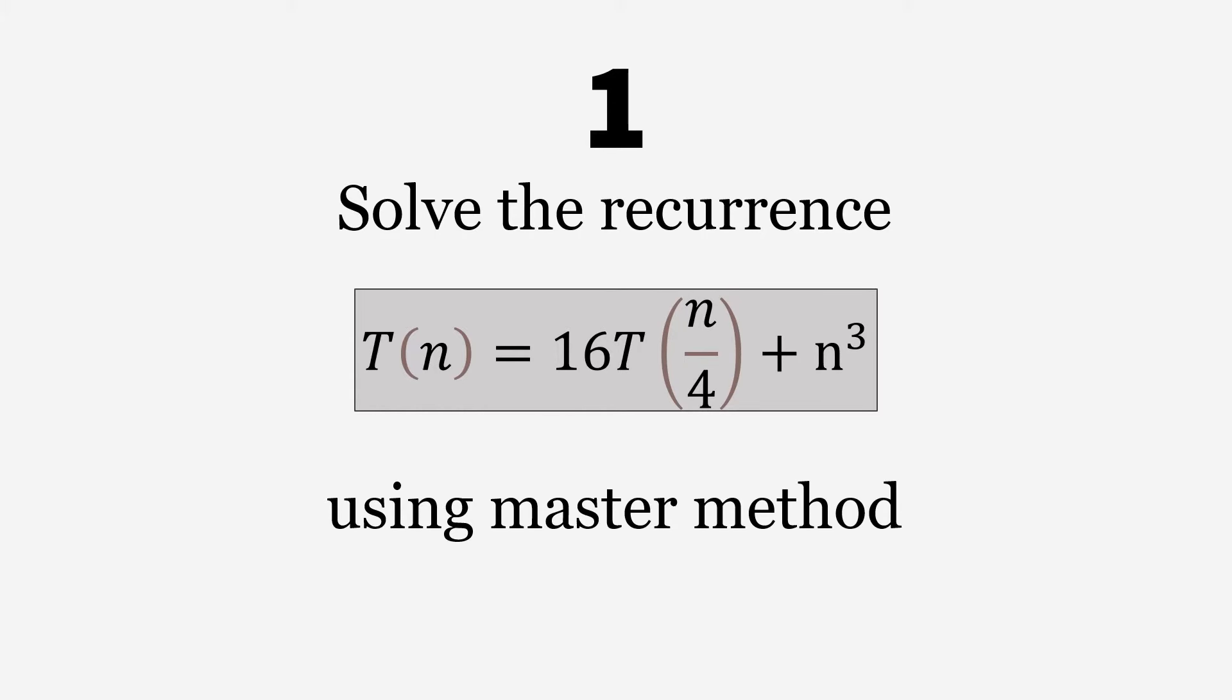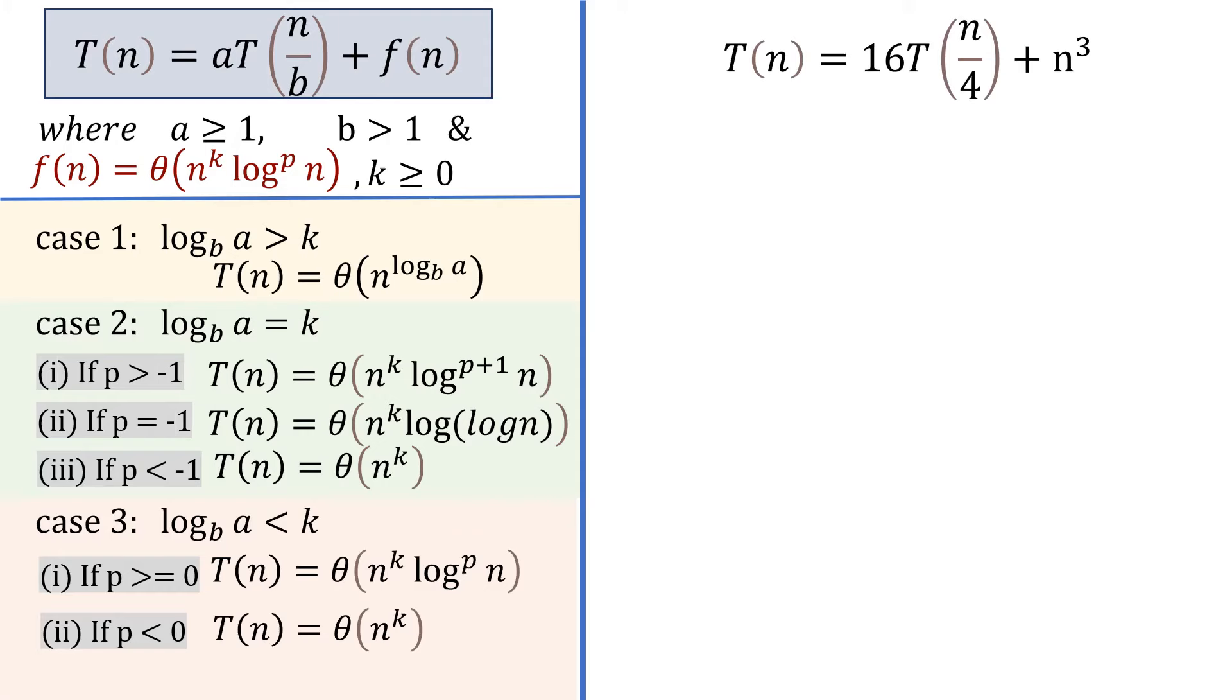The first question is T(n) = 16T(n/4) + n³. For solving this question you just have to compare it with the standard formula. As you can see, this is a dividing function similar to T(n) = aT(n/b) + f(n). Your first step is to find the value of a. By comparing these two equations, a is 16 and b is 4, and your f(n) is n³.